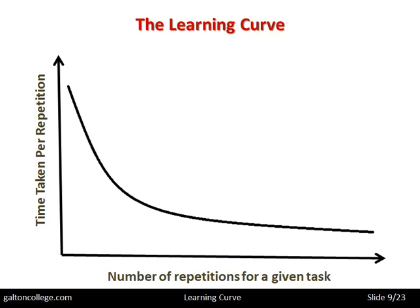We can imagine the time to produce the task falling, because we learn from our errors, we learn from doing, we gain the experience of working it. So the time is falling — we're becoming more productive. But it starts to flatten out as the number of repetitions increases.